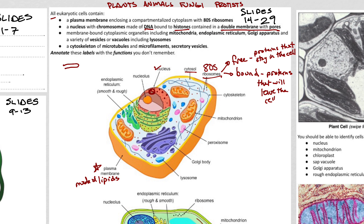If we were to look at it from the side, it would look like this, and right here is our pore. Each of these membranes is a normal lipid bilayer, so it looks kind of like this — there's our lipid bilayer. That's a zoom-in of just this part right here, which means this membrane also has that as well.